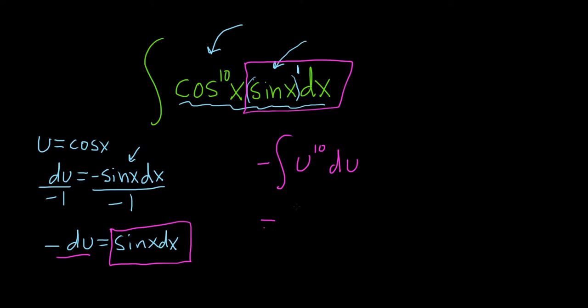Now we use the power rule, so we drop the integral sign, we drop the du. So negative u to the 11 over 11, adding 1 and dividing by the result, plus c.